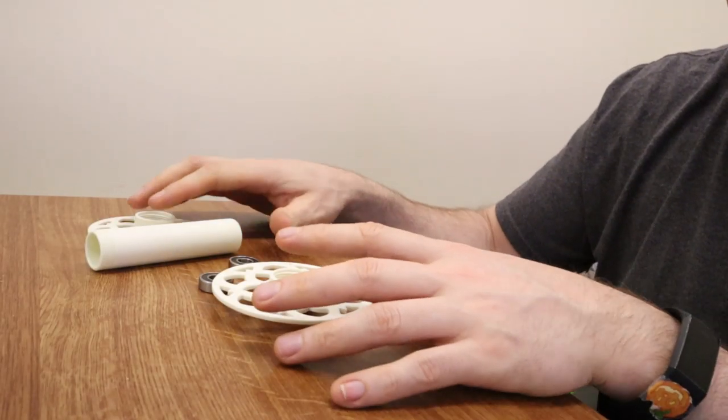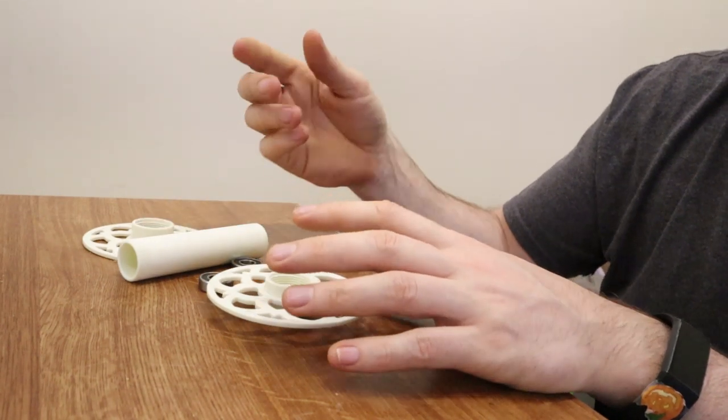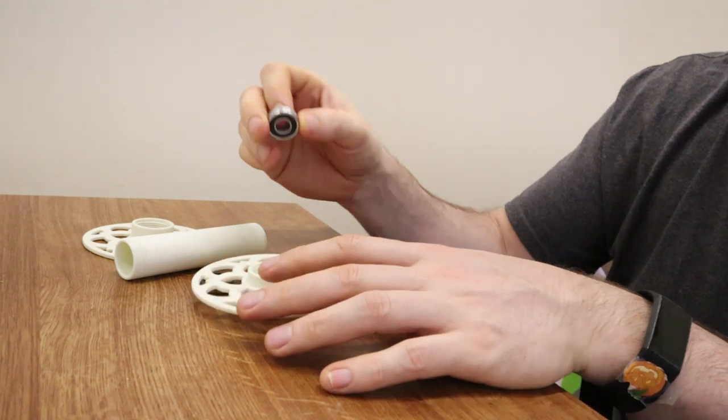People have been asking if the bobbins are collapsible on the Electric Eel Wheel 6 and this should answer your question. Yes they are. So that makes traveling with them a little bit easier.